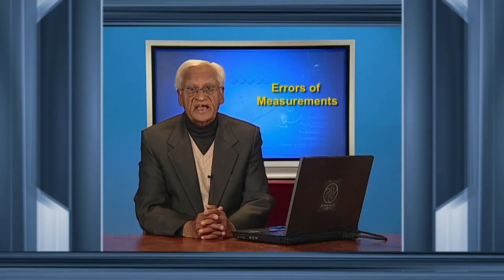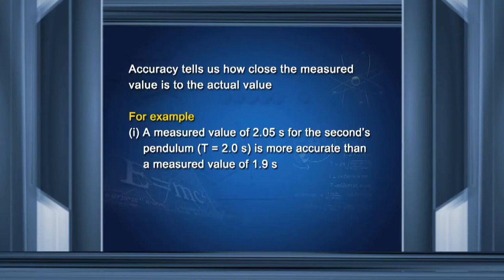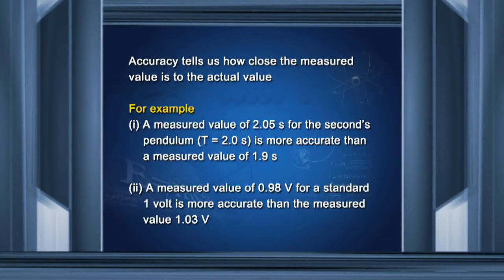That was about precision. Accuracy tells us how close the measured value is to the actual value. For example, a seconds pendulum has a time period equal to 2.0 seconds. A measured value of 2.05 seconds is more accurate than a measured value of 1.9 seconds — you can see that 2.05 is closer to 2.0. Similarly, a measured value of 0.98 volt for a standard 1 volt is more accurate than a measured value of 1.03 volt.